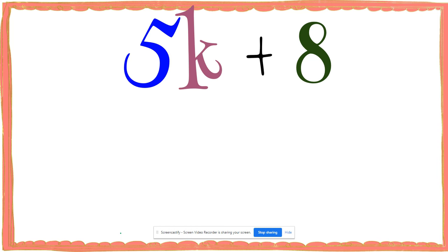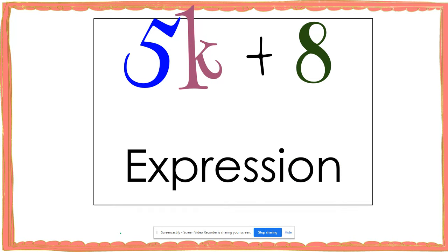We're going to identify parts of an algebraic expression using the expression 5k plus 8. The whole thing would be considered an expression. An expression is split up into what we call terms. Terms can be identified by finding the plus or minus signs in your expression. The term will be what separates each plus or minus sign.